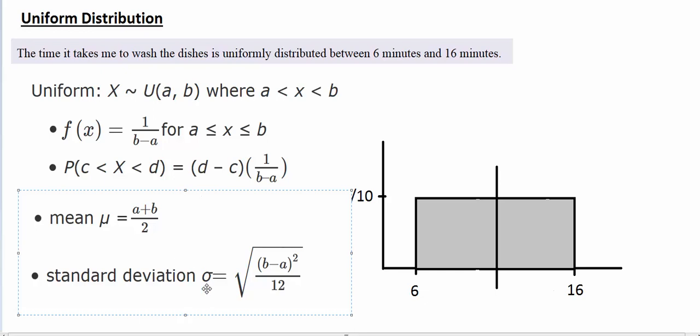And then the standard deviation is the square root of the top of our interval minus the bottom of our interval squared, divided by 12. So it would be 10, in this case, squared, divided by 12.